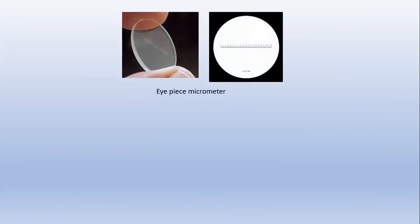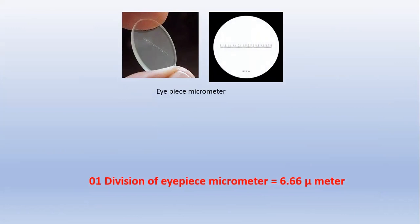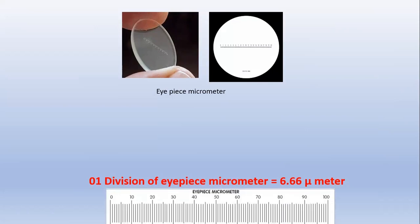We are going to use this calibration — when measuring a particle, we just multiply the number of eyepiece divisions by 6.66 micrometers to get the actual size. In this way we perform the calibration of the eyepiece micrometer. A practical demonstration will be given in the next video. If you like this video, please subscribe to my channel and give a like. Thank you.